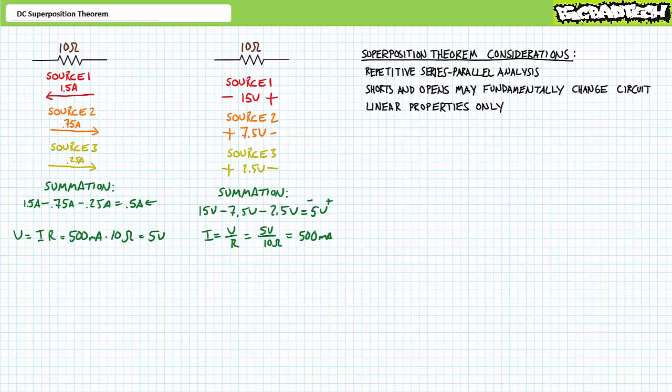The superposition theorem has some attached trickery. As we'll learn later in the illustrated example problems, the superposition theorem necessitates removal of sources not currently under consideration with the incorporation of shorts or opens. The addition of shorts or opens may fundamentally change the nature of the as-analyzed circuit. Recall that opens present infinite resistance through which no current will flow, whereas shorts present no resistance — all current will flow in preference to other paths.